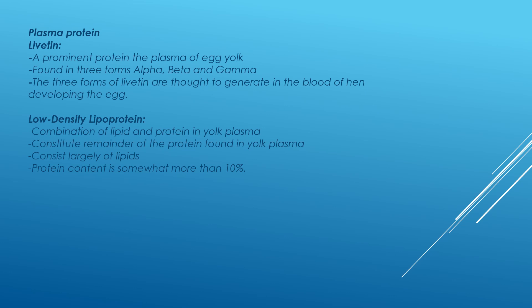Livetin is a plasma protein and a prominent protein of egg yolk. It is found in three forms: alpha, beta, and gamma. The three forms of livetin are thought to originate in the blood of the hen developing the egg. Low-density lipoprotein is a combination of lipid and protein in yolk plasma, constituting the remainder of the protein found in yolk plasma. It consists largely of lipids, with protein content somewhat more than 10 percent of lipids.